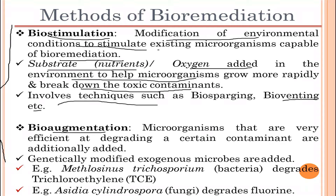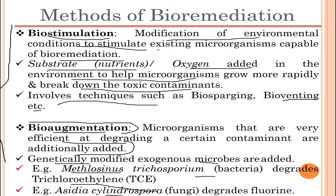Talking about bioaugmentation: microorganisms that are very efficient at degrading a certain contaminant are additionally added. Genetically modified exogenous microbes are also added, such as Methylosinus trichosporium, a bacterium that degrades trichloroethylene, and Aspergillus cylindrospora, a fungus which degrades fluorene. These are some of the important microbes added for degrading certain contaminants.